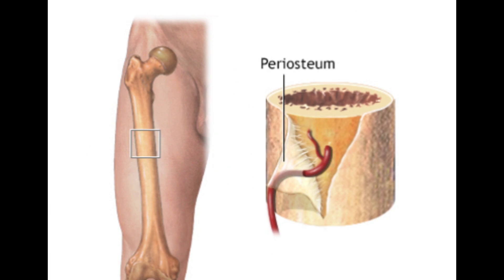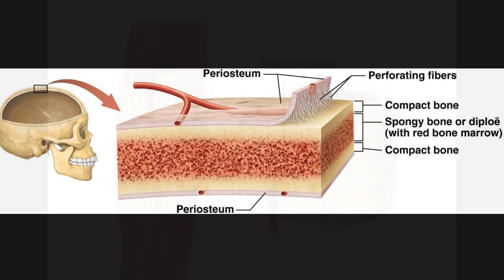The outer surface of bones is covered by a dense fibrous membrane called periosteum. It contains blood vessels, nerves, and connective tissue that nourish and protect the bone. Perforating (Sharpey's) fibers are collagen fibers that extend from the periosteum into the bone matrix, anchoring the periosteum to the bone and providing stability.